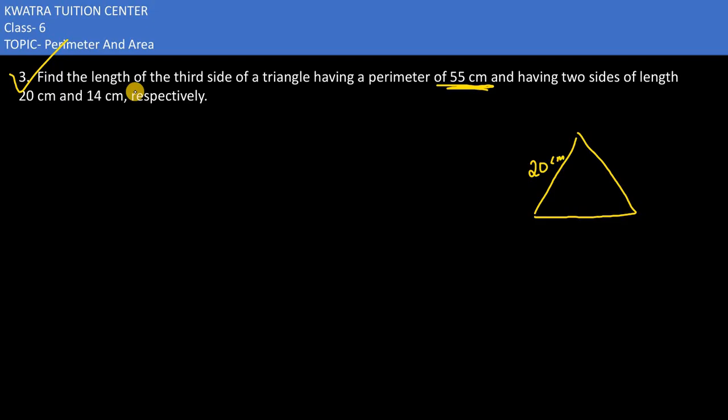We have two sides given here. One's length is 20 and the other one is 14. We need to find out the third side, let's say it is c.